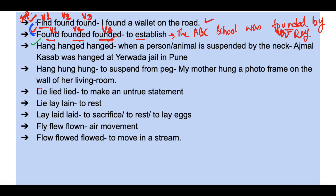Next: hang, hanged, hanged — and hang, hung, hung. When we say hang, hanged, hanged, it means a person or an animal is suspended by the neck, which kills that person or animal. For example: 'Ajmal Kasab was hanged at Yerwada Jail in Pune,' meaning he was sentenced to death.